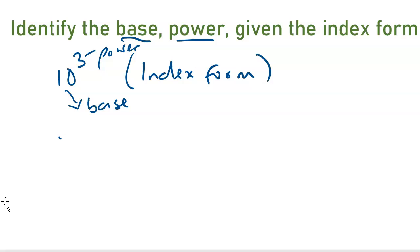So if you had 2 to the power of 5, the base is 2, 2 is the base and 5 is the power.